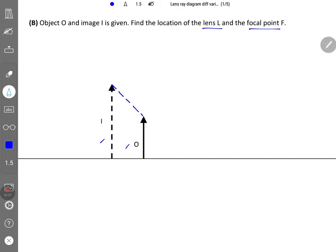Between here it should be a dotted line because it's a virtual ray. So when this ray passes through the principal axis, this will be the position of the lens. Let us label it as L.